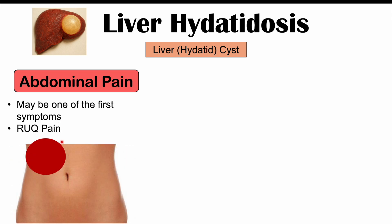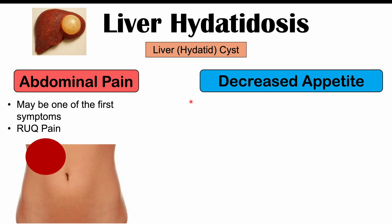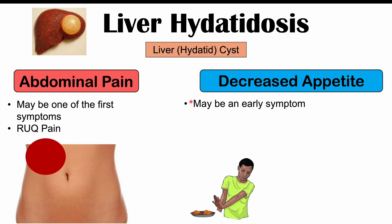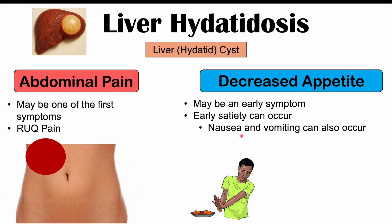The pain is going to be right upper quadrant pain. If we break up the abdomen into four quadrants, the liver is located in the right upper quadrant. As the cyst grows and expands, it starts to impinge on other structures in that area, causing right upper quadrant pain. We can also see decreased appetite and early satiety — getting full quicker — and in some cases nausea and vomiting.